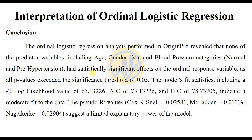In conclusion, the ordinal logistic regression analysis performed in ArginBro revealed that none of the predictor variables — including age, gender, and blood pressure categories of normal and pre-hypertension — had a statistically significant effect on the ordinal response variable, as all p-values exceeded the significance threshold of 0.05. The model fit statistics include a minus 2 log likelihood of 65.13, AIC of 73.13, and BIC of 78.73, indicating a moderate fit to the data. The pseudo R-square values — Cox and Snell = 0.02, McFadden = 0.01, Nagelkerke = 0.02 — suggest a limited explanatory power of the model.